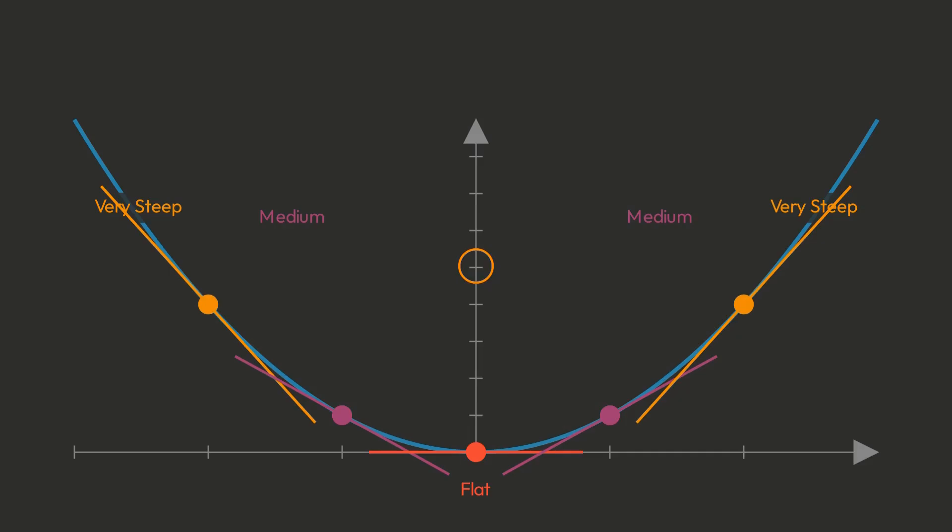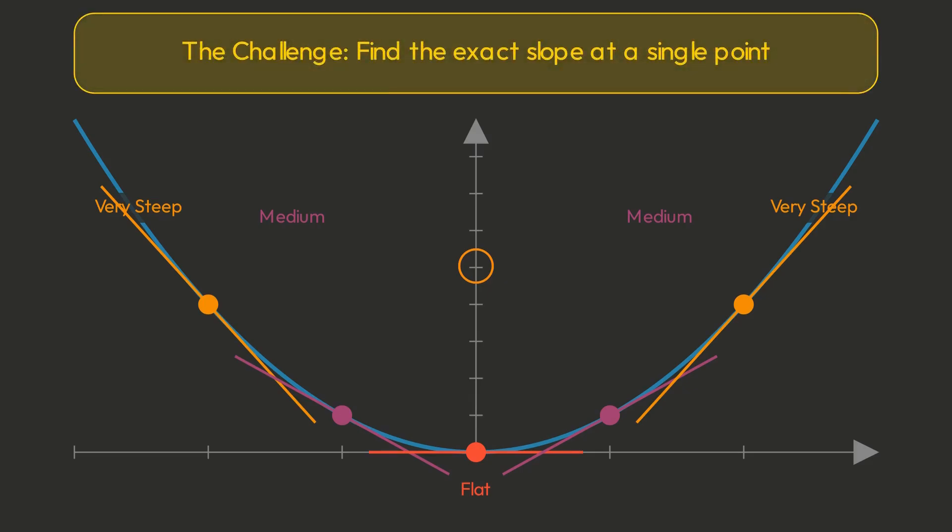We know how to find slope between two points: rise over run. But what about the slope at exactly one point?